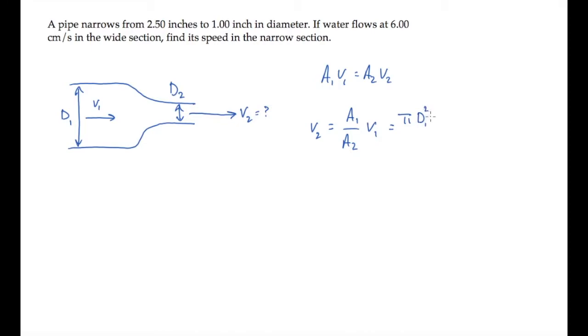The pipe's cross-section is a circle, so each of the cross-sectional areas is that of a circle, pi r squared, or pi d squared over 4.